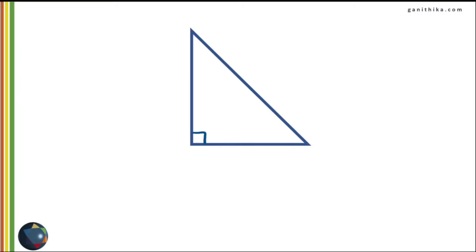Consider this right-angled triangle. Let's name the sides as A, B, C. A and B are two legs of the right-angled triangle and C is the hypotenuse. Let theta be one of the two non-right angles.